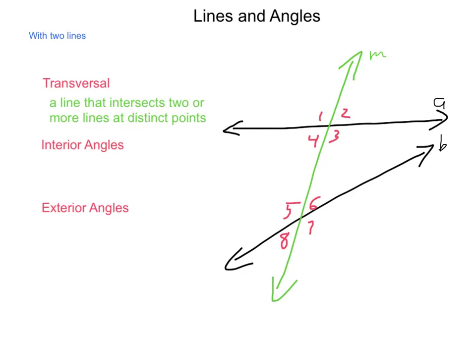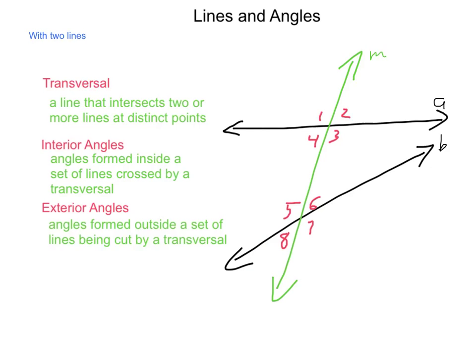Next, we start talking about interior angles. Interior means inside. So when we have the two lines and the transversal, anything that is on the inside, such as angles 3 and 4, or 5 and 6, become interior angles. To counter our interior angles, exterior angles are those that fall on the outside, such as 1 and 2, and 7 and 8. Many relationships exist with interior and exterior angles, and we will see a lot of those as we move forward, especially with parallel lines.